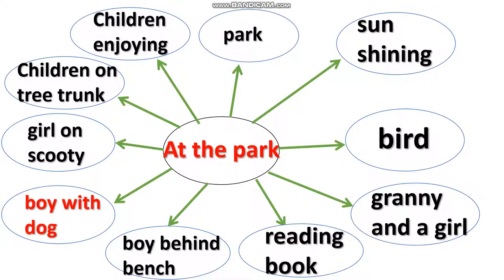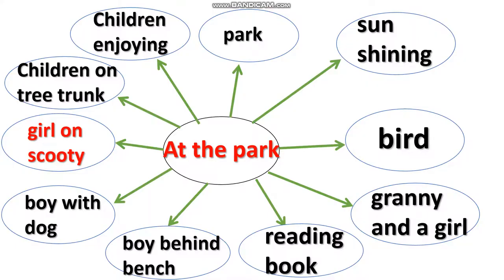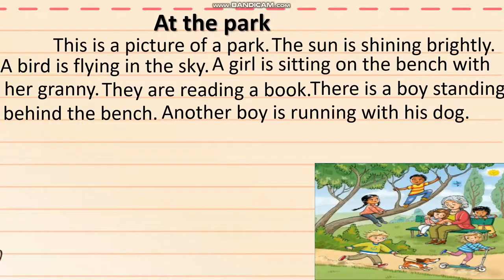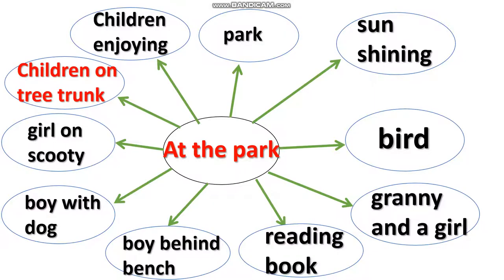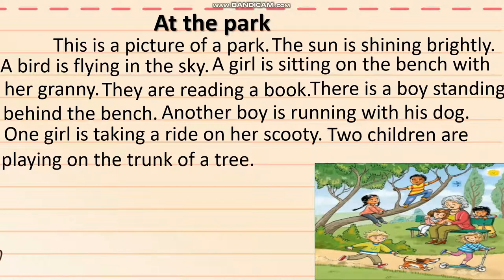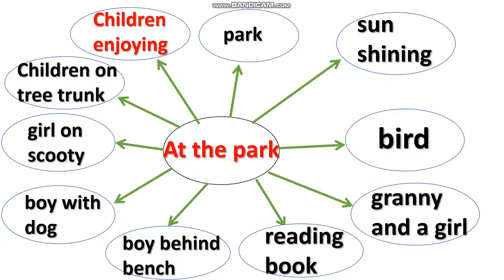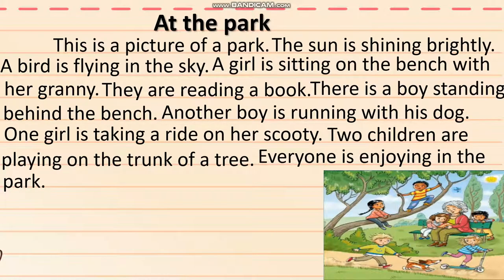Boy with dog — another boy is running with his dog. Girl on scooty — one girl is taking a ride on her scooty. Children on tree trunk — two children are playing on the trunk of a tree. Children enjoying — everyone is enjoying in the park.